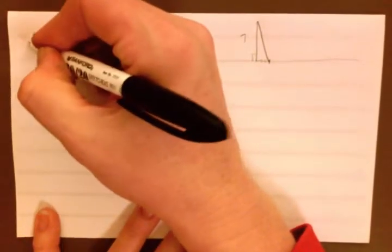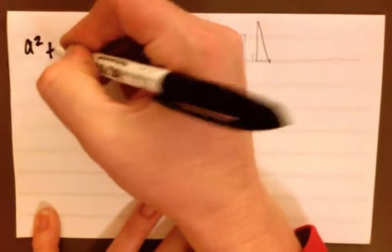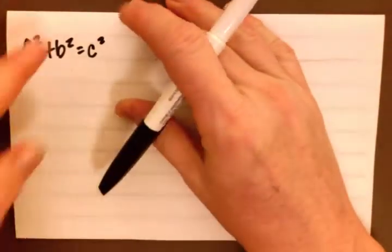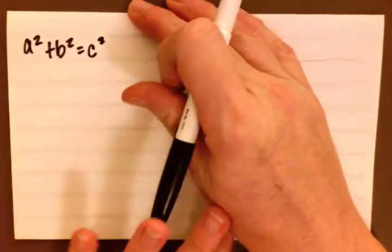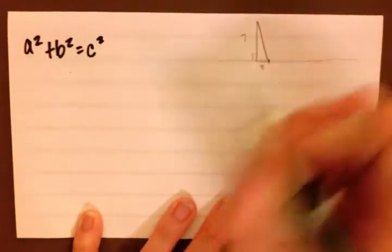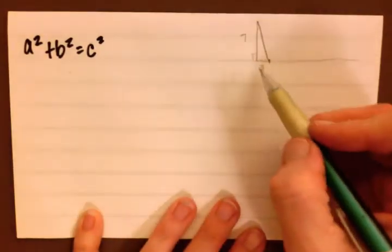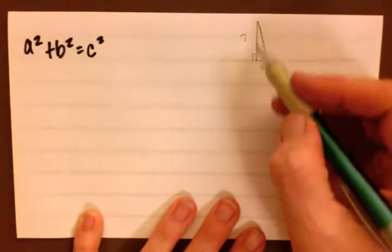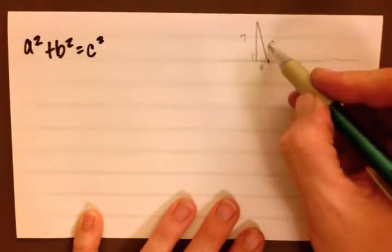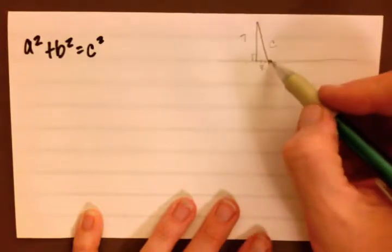Whenever we're trying to solve in a right triangle we use a squared plus b squared equals c squared, and that is the Pythagorean theorem. This was three feet from the pole to the stake, and what we're trying to solve for is the length of the rope, which we are going to call c here.